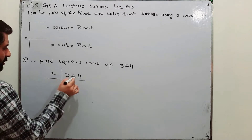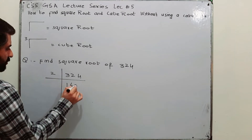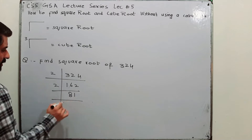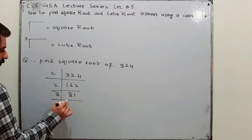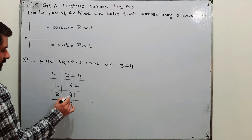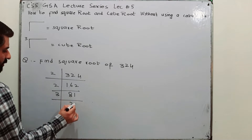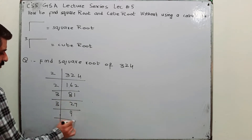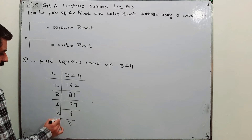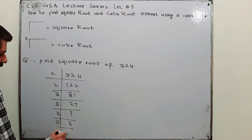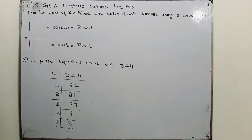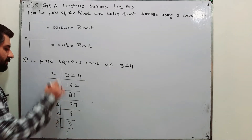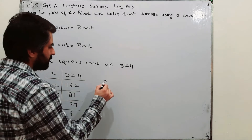Performing the prime factorization of 324: dividing by 2, then 2 again, then by 3 repeatedly. The prime factors of 324 are 2, 2, 3, 3, 3, and 3.